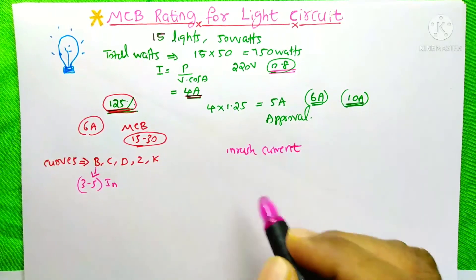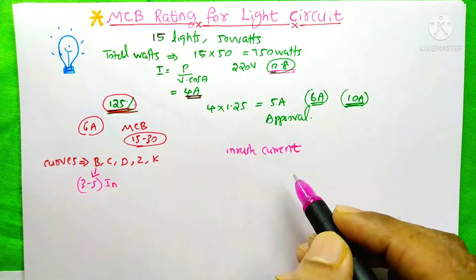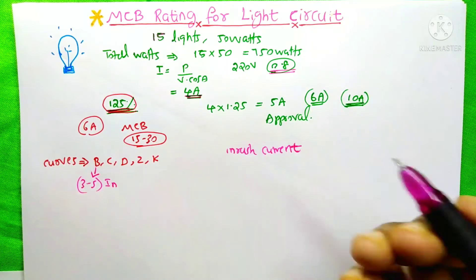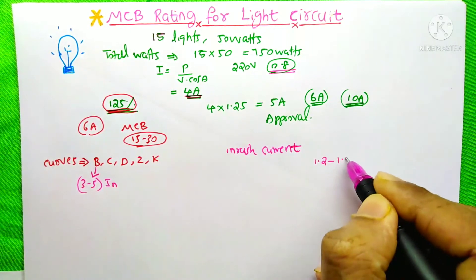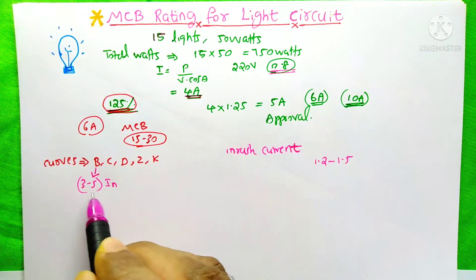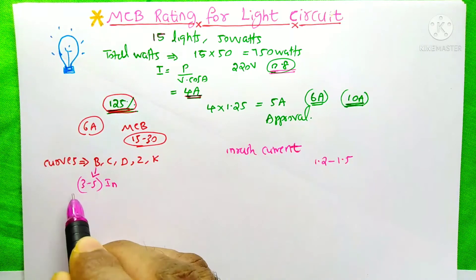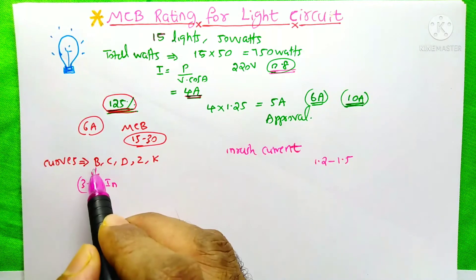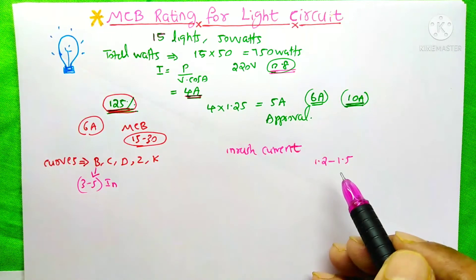On that inrush current, we don't want our MCB to trip. This inrush current may be 1.2 or 1.5 times. But the B curve allows 3 to 5 times the inrush current, so this B curve is enough for our light circuit.